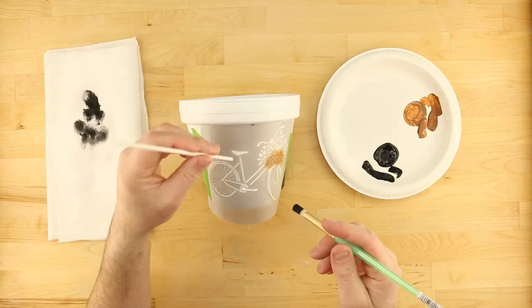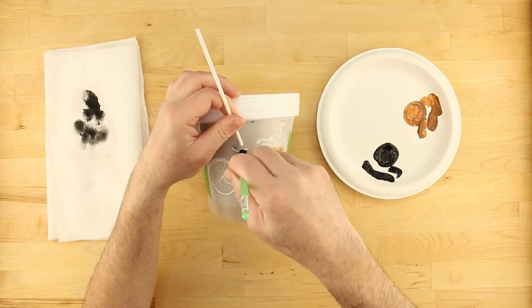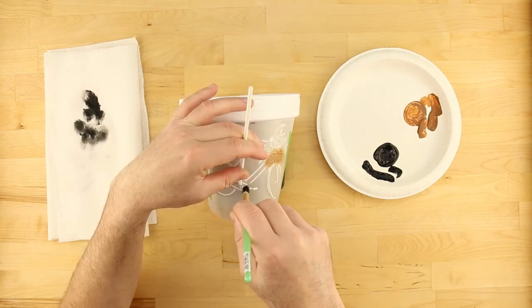If you find any portion of the stencil that's lifting slightly, use a long needle, chopstick, or similar tool to help keep the stencil flush with the pot's surface.